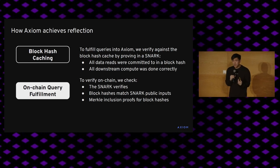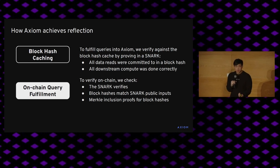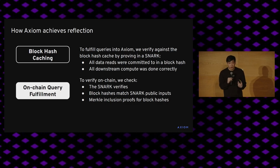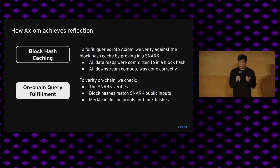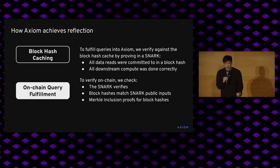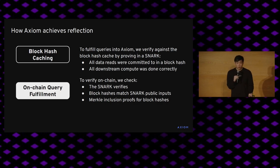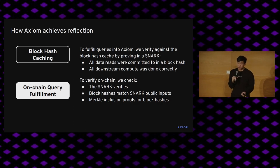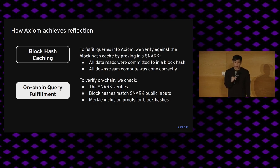The day we did that, we were the number two gas consumer on Ethereum, which is a rather dubious distinction I hope not to repeat. When we actually fulfill a query about specific historic information into Axiom, we can verify proofs against this cache of block hashes. All we need to do for single queries is Merkle-Patricia trie proofs that are verified in our smart contract against these Merkle roots.